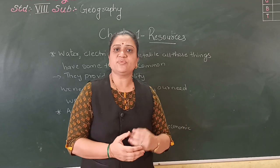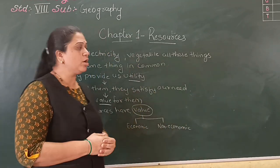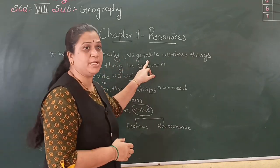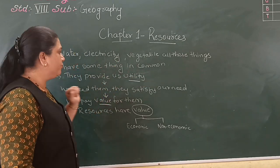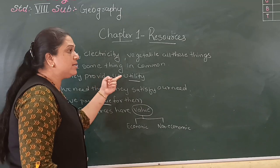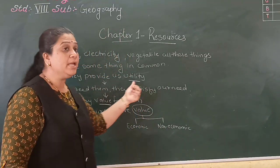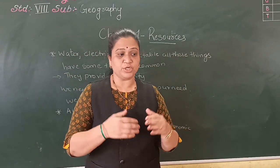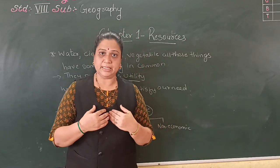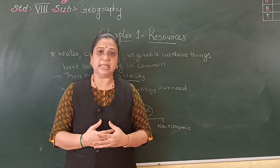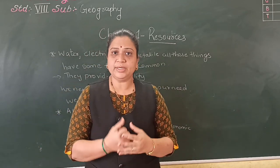The things which satisfy human needs are called resources. Now when we talk about water, electricity, and vegetables, all these things have something in common — they provide us utility. Utility means the things which we use for our satisfaction. For example, air we breathe, water we drink, we use water for so many purposes, so it has utility.